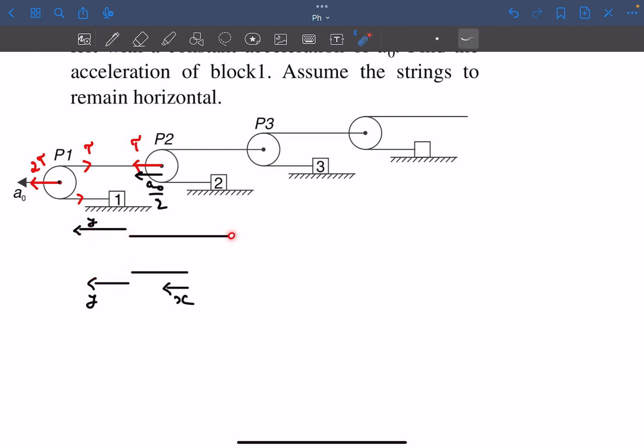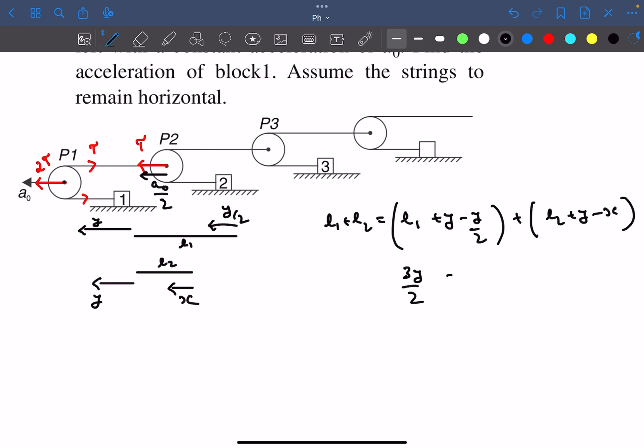What will be the displacement of this end? If this pulley's acceleration is A0 towards the left and this pulley's acceleration is A0 by 2, if this end moved left by y then this end will move left by y by 2. Now using the constraint that the string's length must be constant, we can say l1 plus l2 should equal the final length which is l1 plus y minus y by 2 plus l2 plus y minus x. From here we get 3y by 2 equals x.